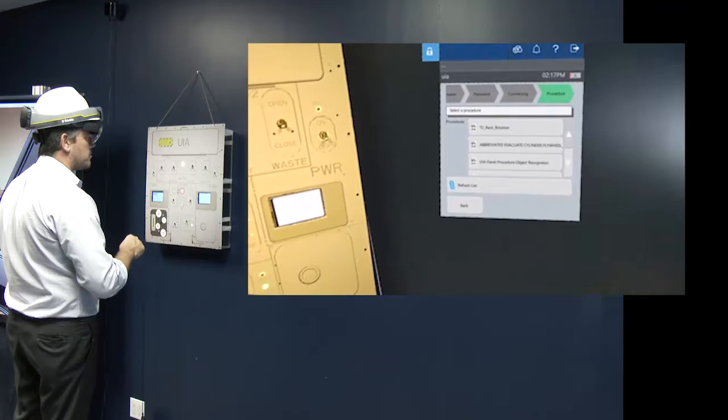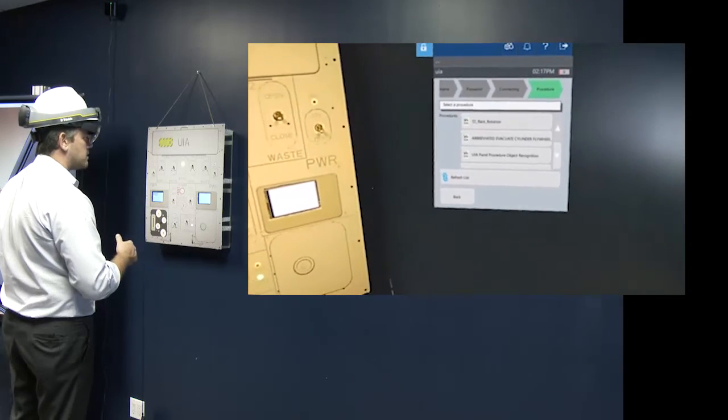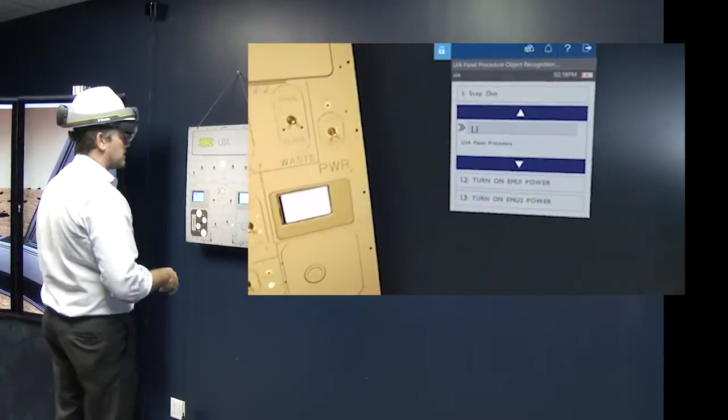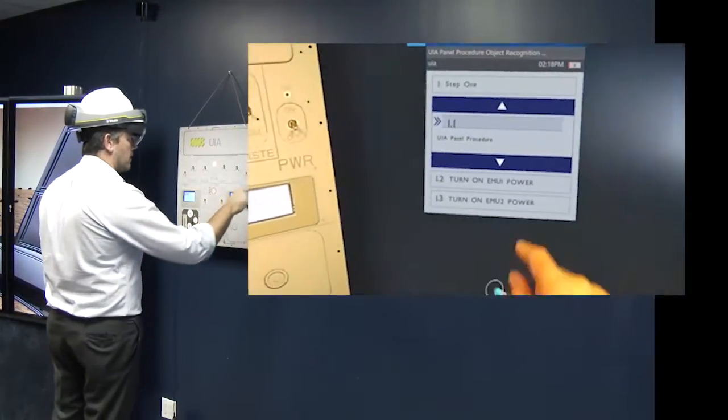Then I'm going to go ahead and choose the procedure that I want to do. Obviously that's the UIA panel procedure object recognition. Alright, that's identify the UIA panel procedure.